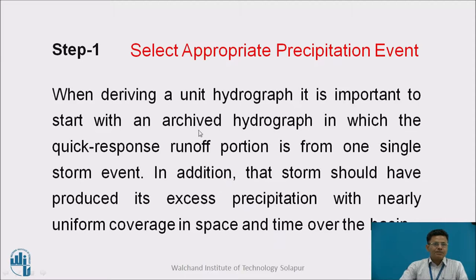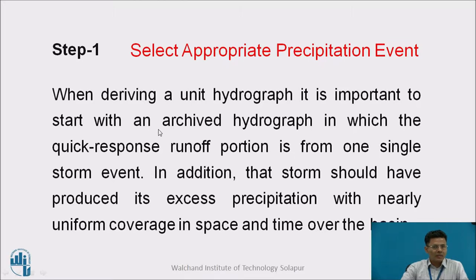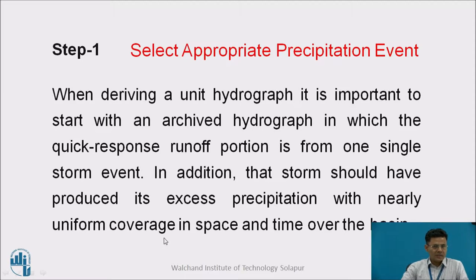Step 1 is to select an appropriate precipitation event. When deriving a unit hydrograph, it is important to start with an archived hydrograph in which the quick response runoff portion is from one single storm event. The storm should have produced its excess precipitation with nearly uniform coverage over space — that is spatially — and it should also be uniform over time.